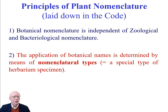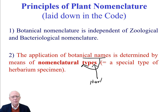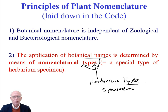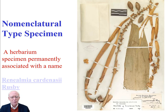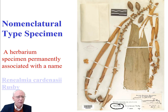The second big principle: botanical names are determined by nomenclatural types — these are herbarium specimens, specifically herbarium type specimens. How do you know something is a type? It will say right on the specimen that it's a type specimen; it is designated as such. Here we have a herbarium specimen that is a nomenclatural type specimen, and we can see on one of its labels that it says holotype. This is the specimen that the name is permanently associated with.